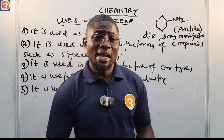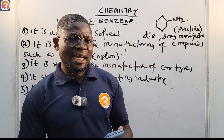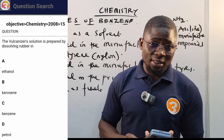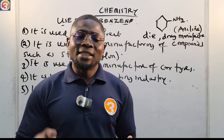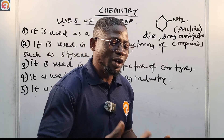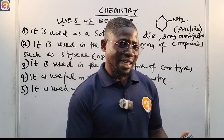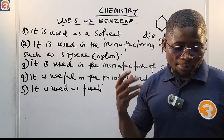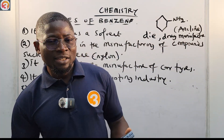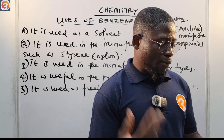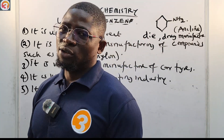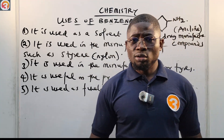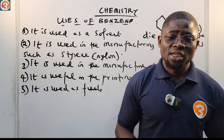Now let's quickly go to the app and answer the question. 2008 number 15 — the vulcanizer solution is prepared by dissolving rubber in: A) ethanol — ethanol cannot dissolve rubber; B) kerosene — kerosene cannot dissolve rubber; C) benzene — benzene can dissolve rubber to form a solution; D) petrol — petrol cannot do that. So the correct answer is C) benzene. This is an important use of benzene.